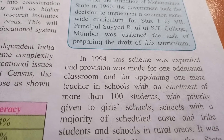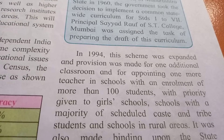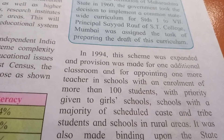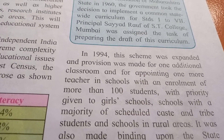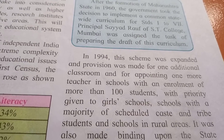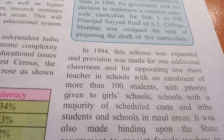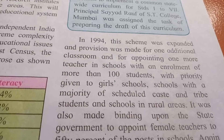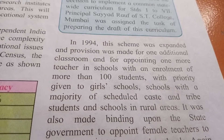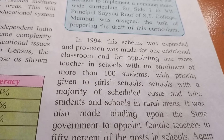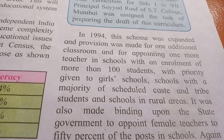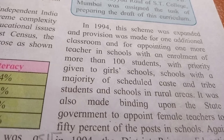In 1994, this scheme was expanded and provisions were made for one additional classroom and for appointing one more teacher in schools with an enrollment of more than 100 students. First it was said one or two teachers and two classrooms; then additional classrooms and teachers were added. Priority was given to girls and schools with a majority of scheduled caste and tribal students.